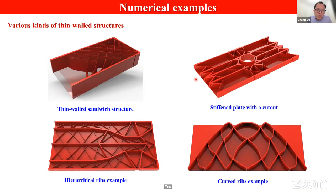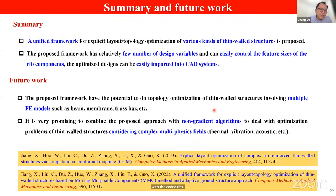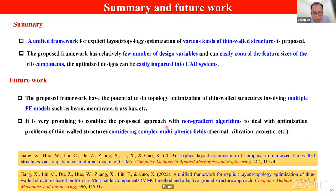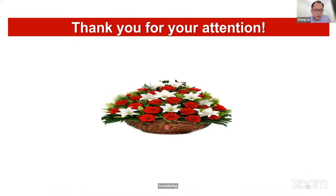In addition, our method can also be used for optimization of other kinds of similar structures, such as sandwich structures and shell structures with curved ribs. More examples can be found in our paper. In conclusion, a unified framework for explicit layout topology optimization of various kinds of rib-reinforced shell structures is proposed. The framework has few design variables, can easily control the feature size of the rib components, and the optimization results can be easily imported into CAD systems. Future research directions include topology optimization of shell structures involving multiple FE models and considering complex multi-physics fields.